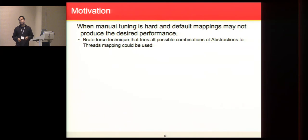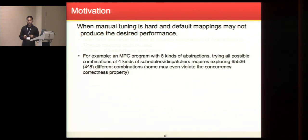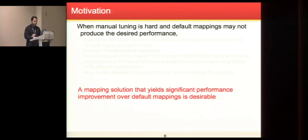Given that, why not try a brute force technique that enumerates all possible mappings? But there is a problem of combinatorial explosion here. To illustrate, consider an example of MPC program with eight kinds of abstraction. If you want to try out four different schedulers, you may end up exploring over 65,000 different combinations, and some of them may not even produce concurrency correct results. Also, if you have a small change in your program, you may end up redoing the whole mapping. In such scenarios, it is desirable to automatically generate a mapping that performs better than the default mapping. That's what our solution is going to be.